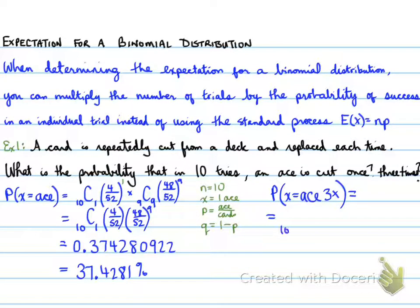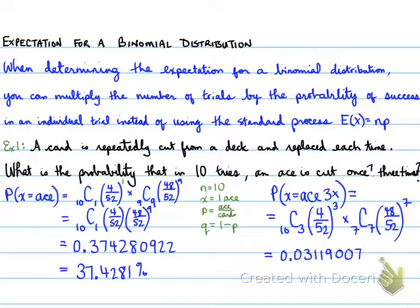Now, let's calculate the probability of getting an ace three times. 10 choose 3 from 10 trials, we want 3 successes of 4/52 three times, multiplied by the losing part, 7 choose 7, times 48/52 for the remaining 7 trials. When we multiply that, we get a decimal answer.